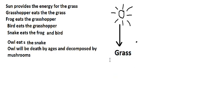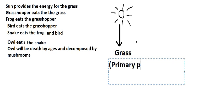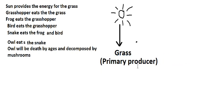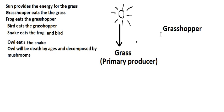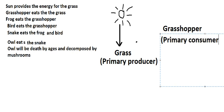This is about primary producers. After you have the grass, we need to know that the grasshopper eats the grass. So the grasshopper goes here — this is about primary consumer — and the arrow will go in this way.